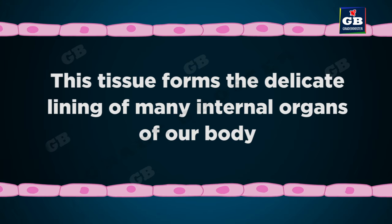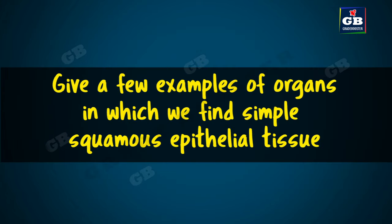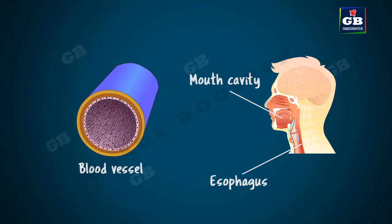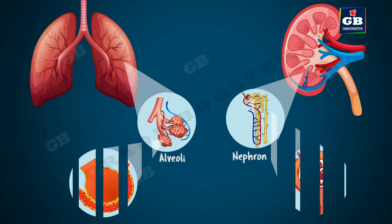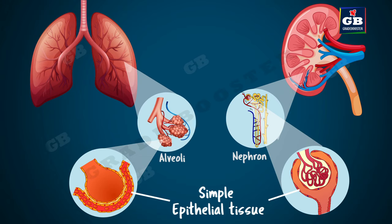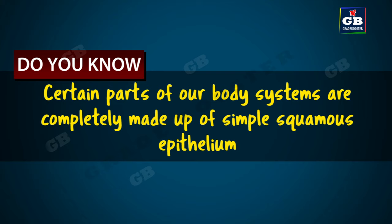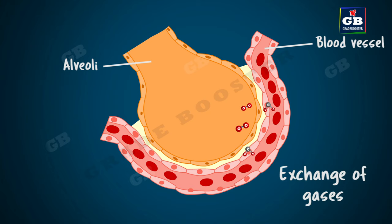This tissue forms the delicate lining of many internal organs of our body. The lining of blood vessels, the lining of esophagus, and the lining of the mouth are made of simple squamous epithelial tissue. The internal organs like stomach and kidneys are made up of muscles, but their cavities are lined internally by simple epithelial tissue. Certain parts of our body systems are completely made up of simple squamous epithelium — the blood capillaries and the alveoli of lungs are made up of simple squamous epithelial tissue.